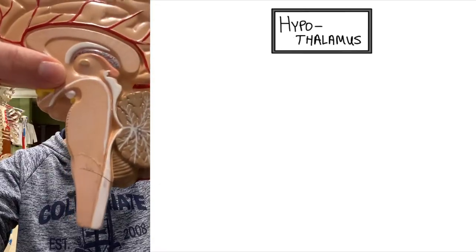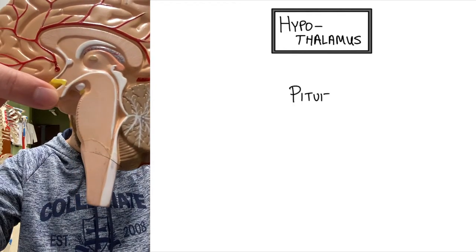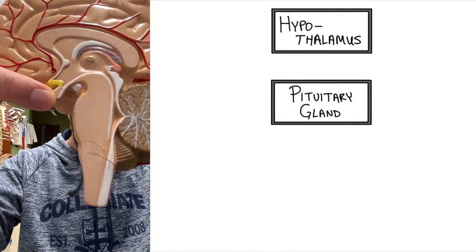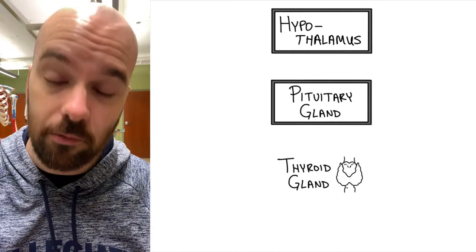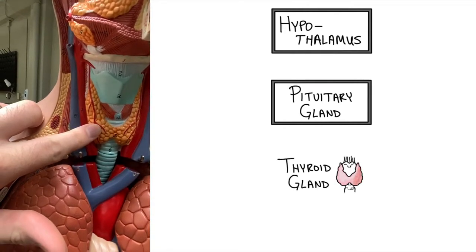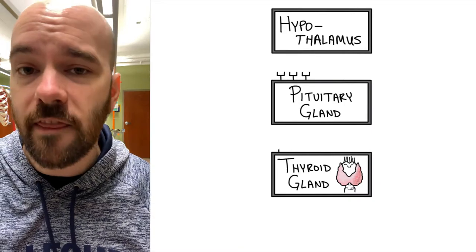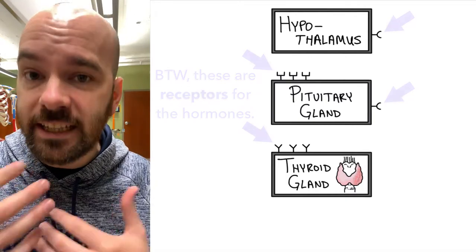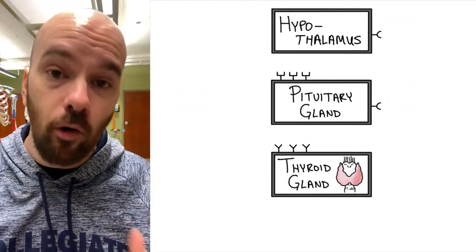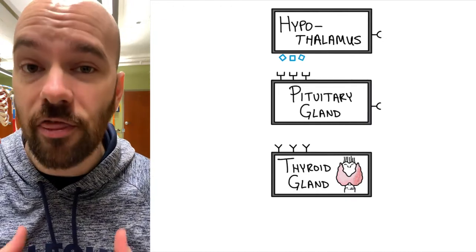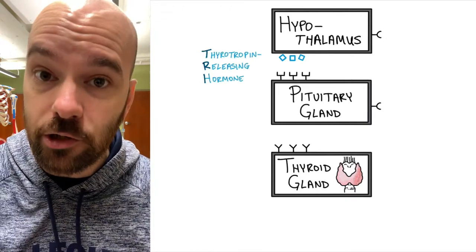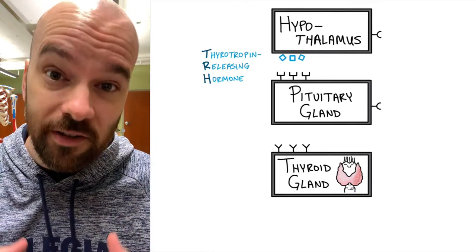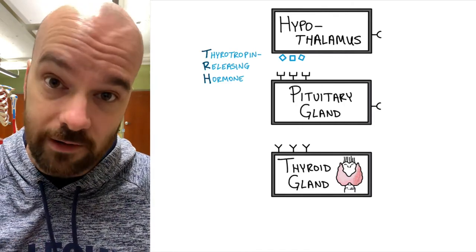Let's jump to the whiteboard. There are three organs involved here: two in the brain and one in the neck. We have the hypothalamus, which is the controller. The pituitary just below that will receive instructions from the hypothalamus. And finally we have the thyroid gland, which releases a hormone that regulates our metabolism. The hypothalamus is sort of normally in an 'on' state — if nothing else changes, it's going to be releasing its hormone.